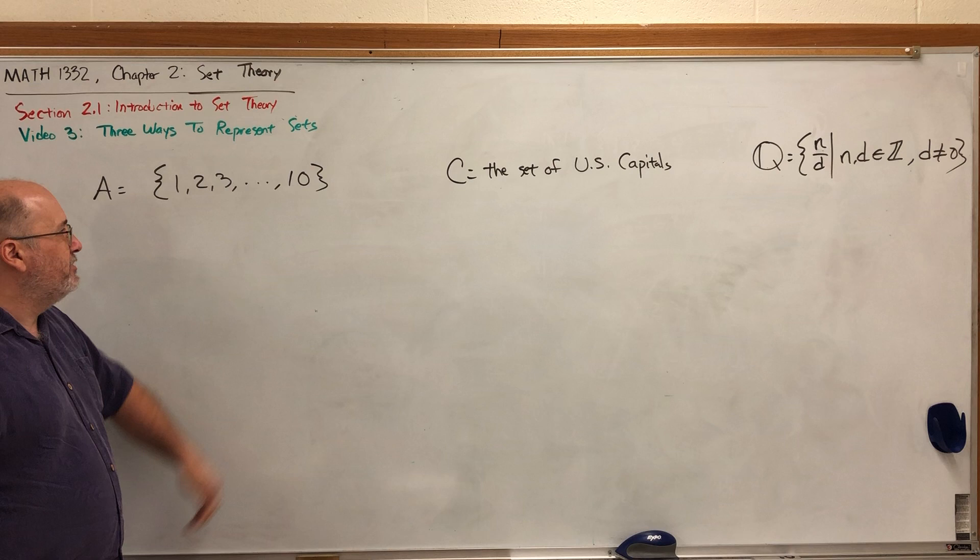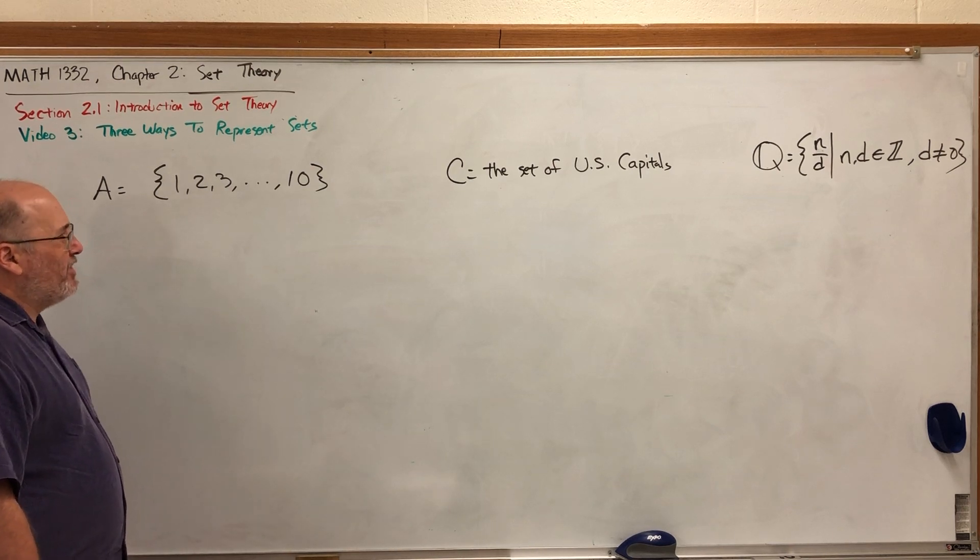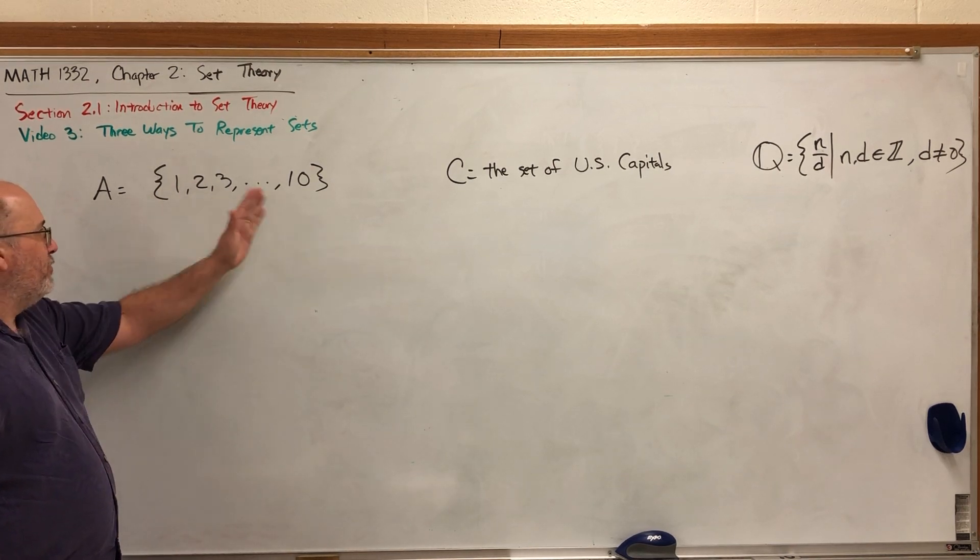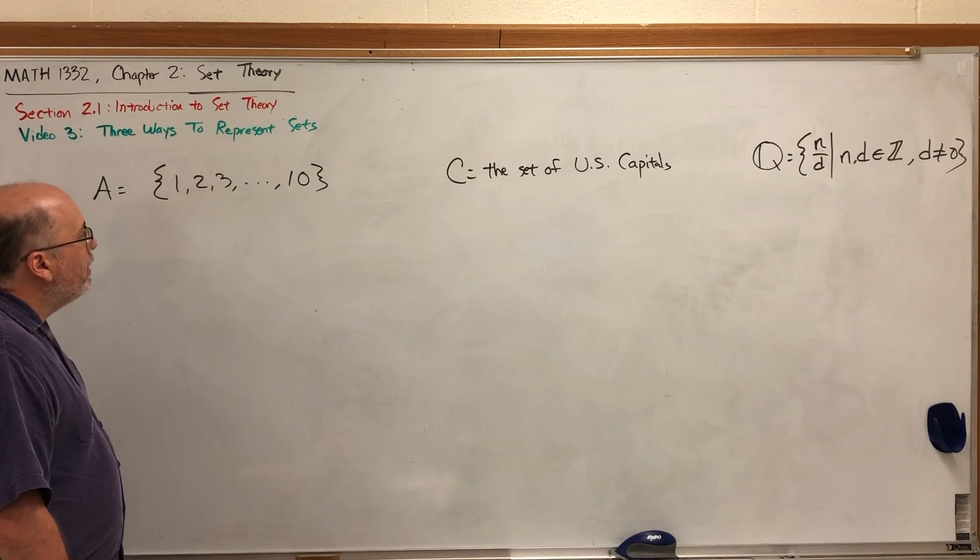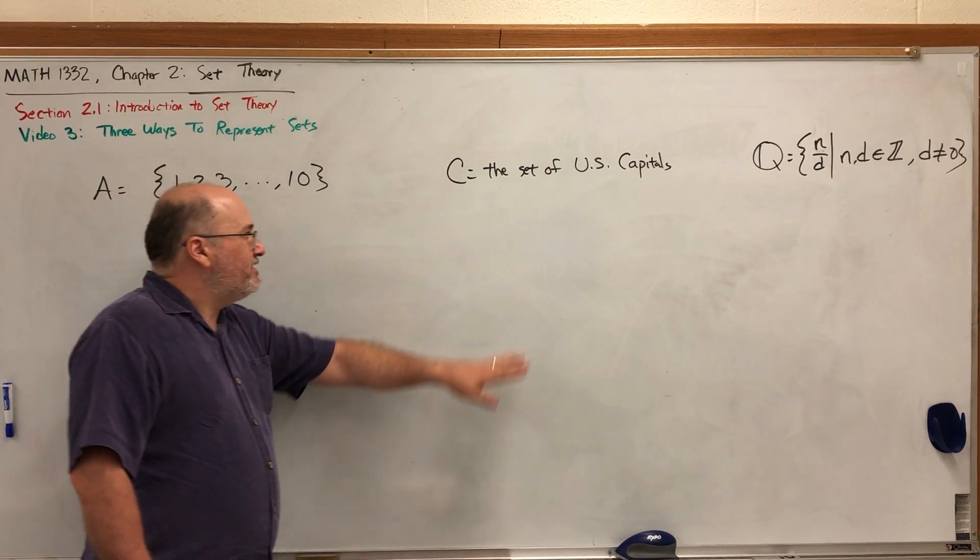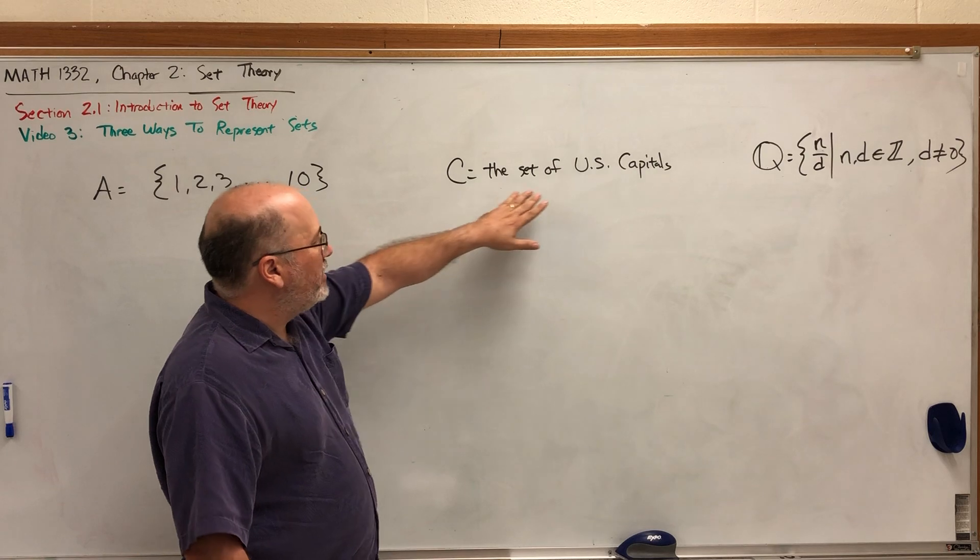I wouldn't say the rational numbers 1 through 10 because that would be missing all the fractions in between. We also defined a set C in the first video as the set of US capitals.